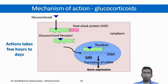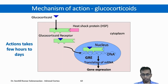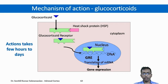Coming to the mechanism of action of glucocorticoids. In humans, cortisol moves inside the cytoplasm where the glucocorticoid receptor is present. Once it binds to the receptor, the heat-shock protein bound to the receptor is removed, and the receptor-hormone complex moves into the nucleus. It then acts on the glucocorticoid response element in the DNA, leading to translation of messenger RNA and gene expression. The important take-home message is that for glucocorticoid action to be seen, it takes a few hours to days, as it must go through mRNA translation, gene expression, and protein formation.